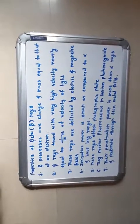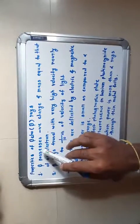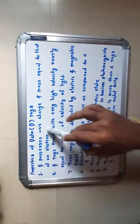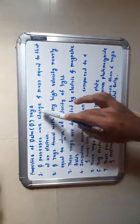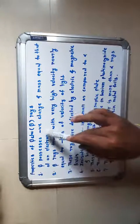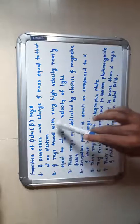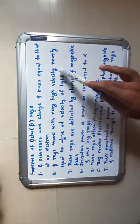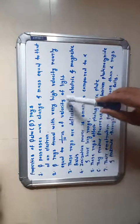Properties of beta rays: First property — beta rays possess negative charge and mass equal to that of an electron. Second property — beta rays travel with a very high velocity, nearly equal to one-tenth the velocity of light.